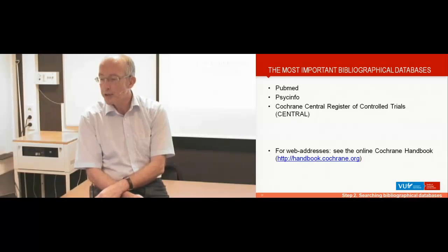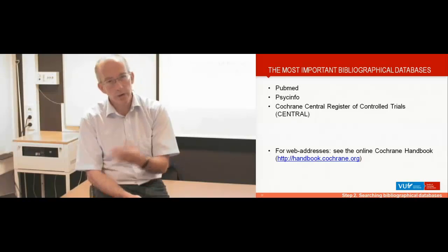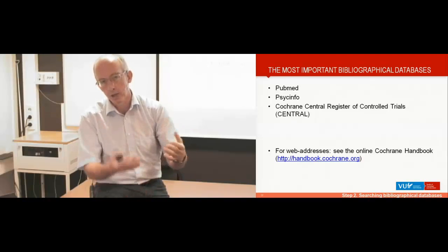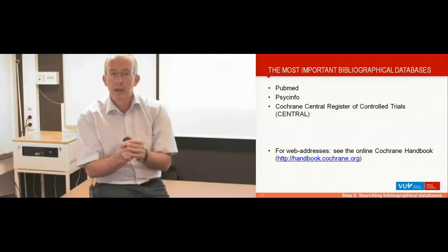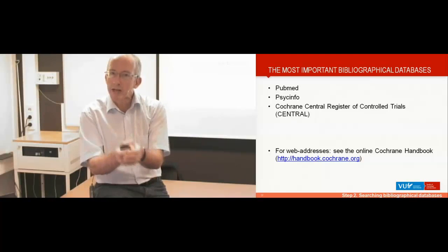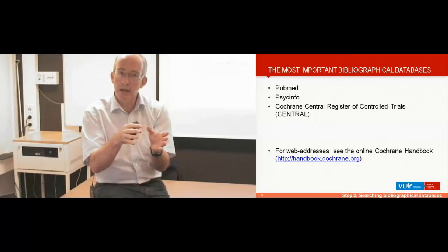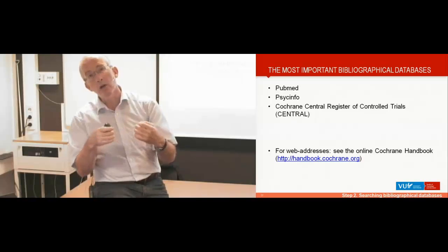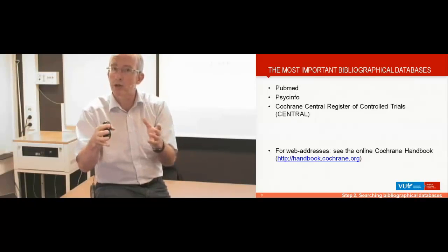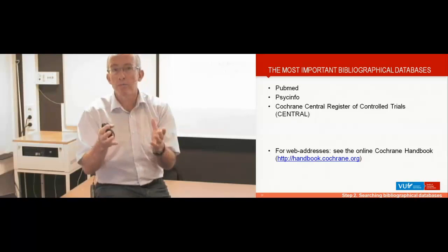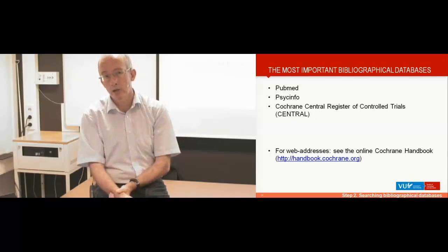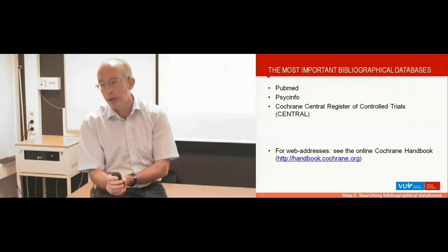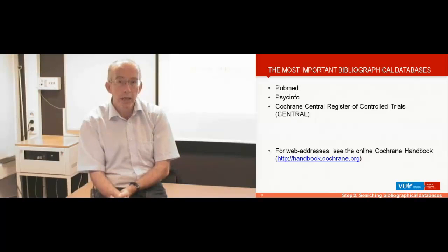The Cochrane Central Register of Controlled Trials is built by the Cochrane Collaboration, who search PubMed and all kinds of databases to identify randomized trials. They also do hand searching, and experts in specific fields participate in the Cochrane Collaboration, using all kinds of methods to identify randomized trials. So if you do a meta-analysis, you always have to search these three databases.